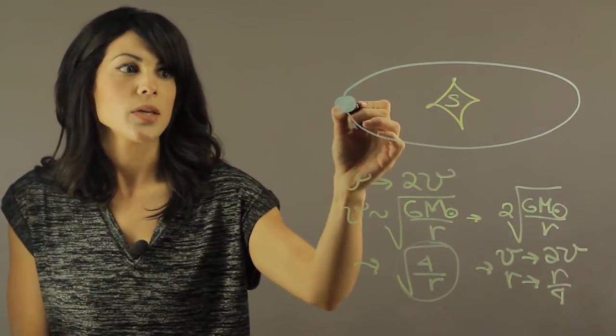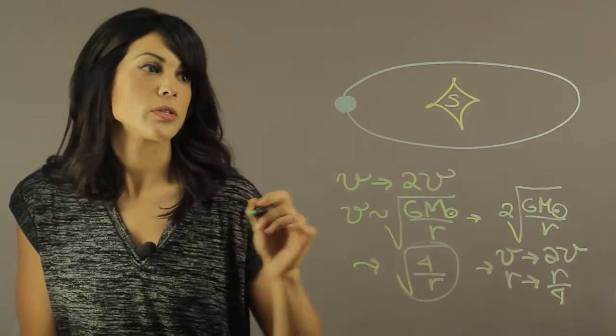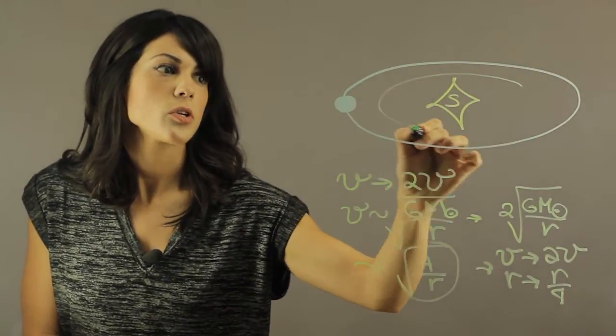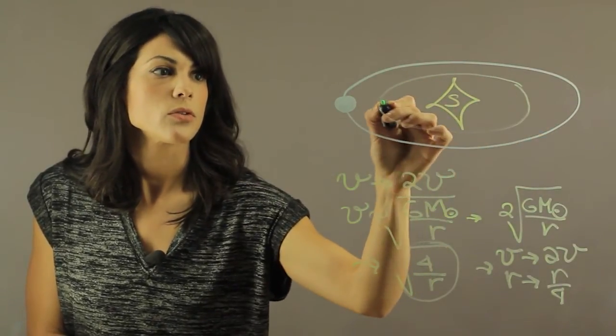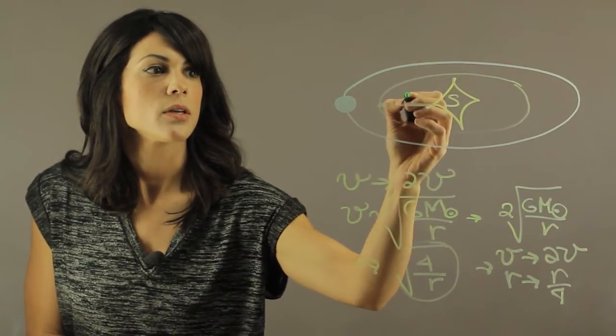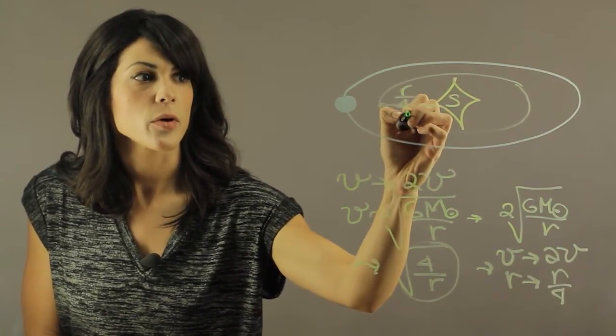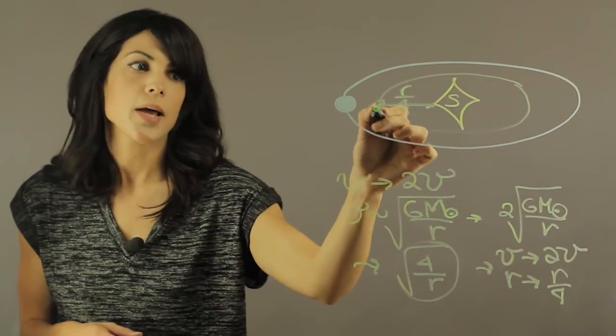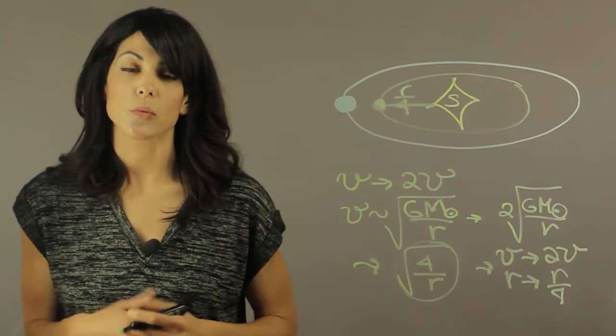So what would happen here? It means that our orbit will be a lot closer to the Sun. So it will be closer by one fourth. So this radius right here, it will be r divided by 4. And that's what would happen if the speed of the Earth around the Sun will double.